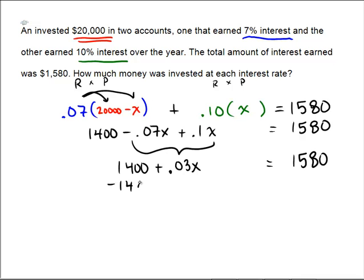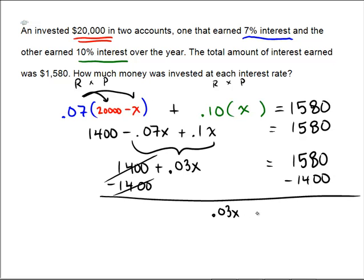Then we will subtract 1,400 from both sides of the equation for the purpose of trying to isolate the variable. Now we're only left with 0.03x equals 180, and then divide by 0.03, so it appears that we get 180 divided by 0.03 which looks like 6,000 dollars.